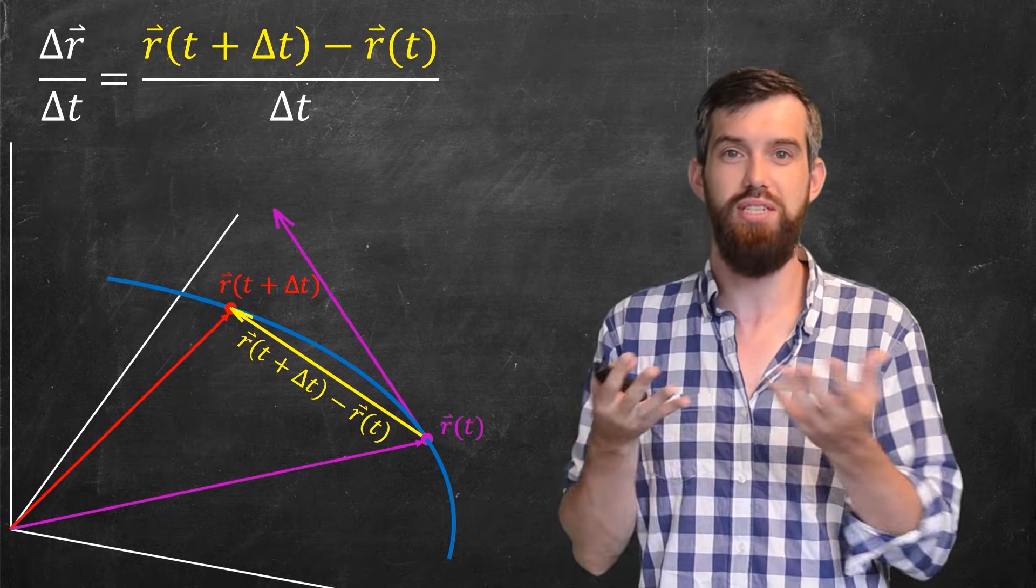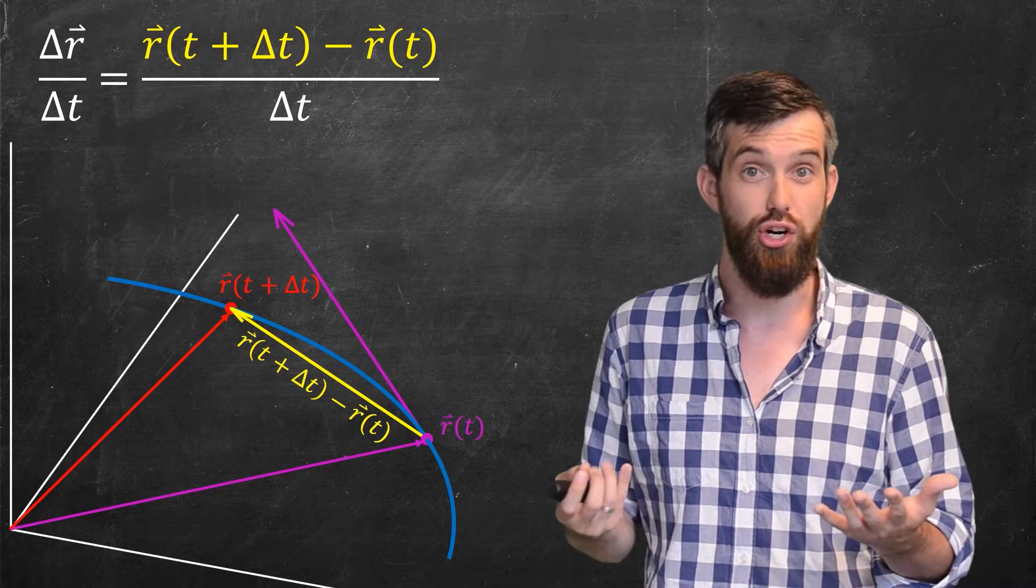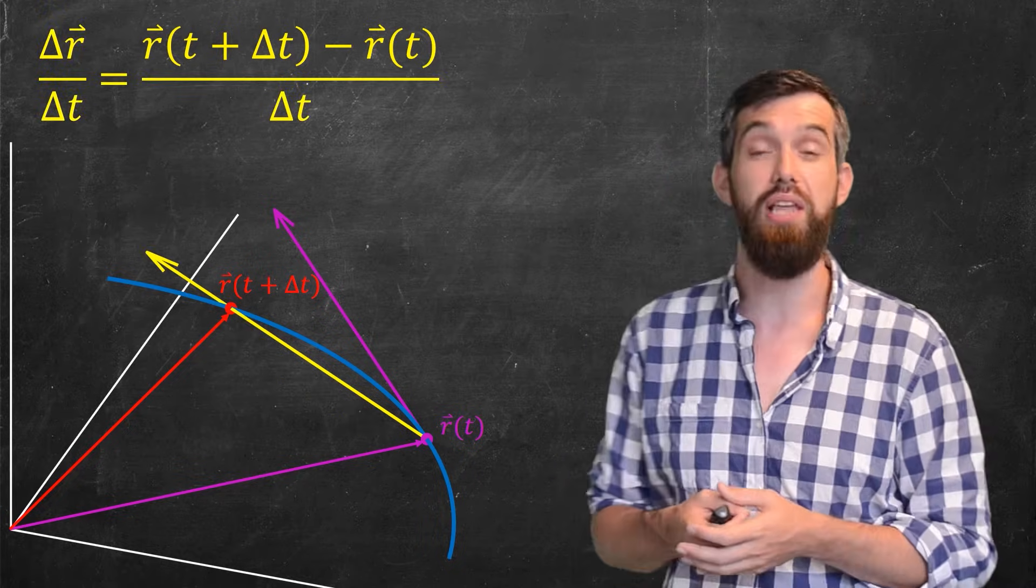For example, if this delta t is a very small number, less than one, then dividing by a number less than one would make it larger. Perhaps it would look something like that.